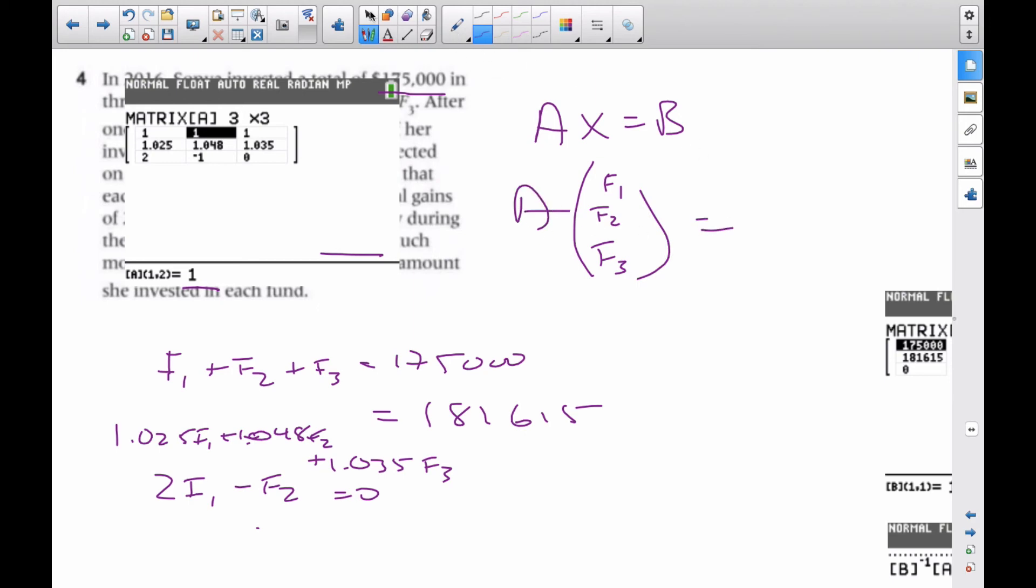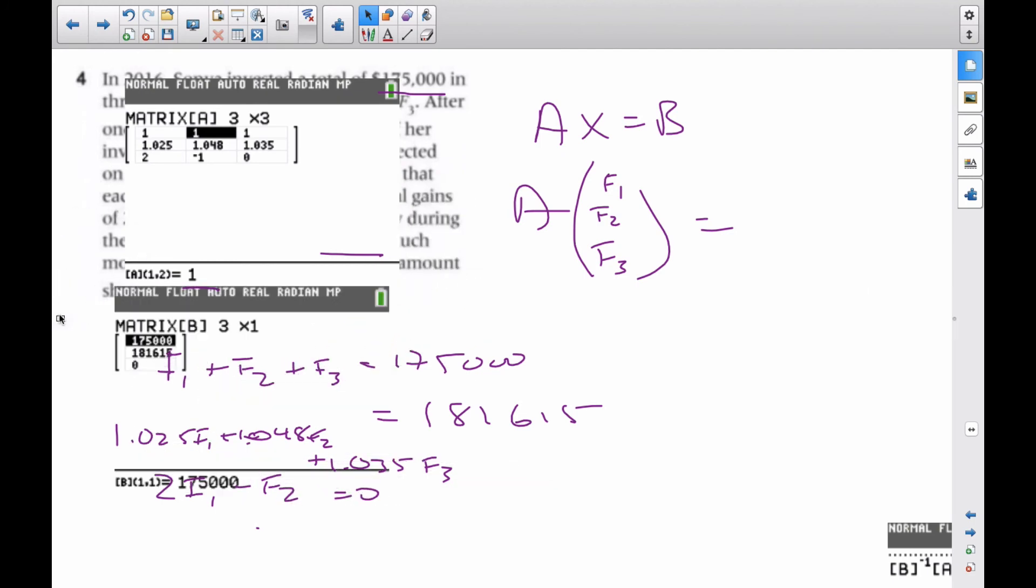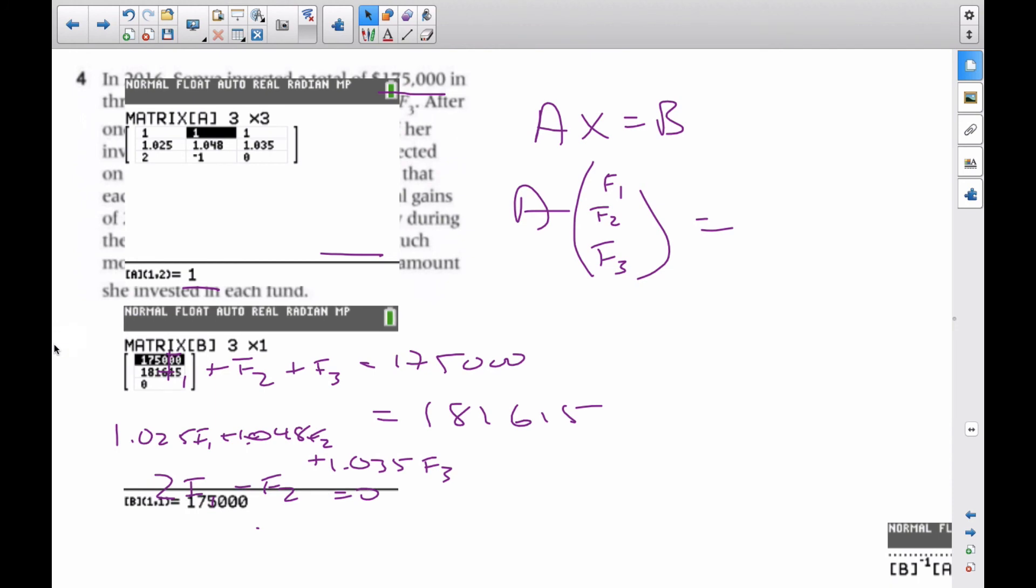And then B, if I show you B, B is going to be this particular matrix here. Here we go: 175,000, 181,615, and 0.